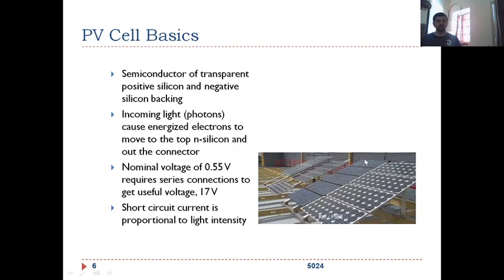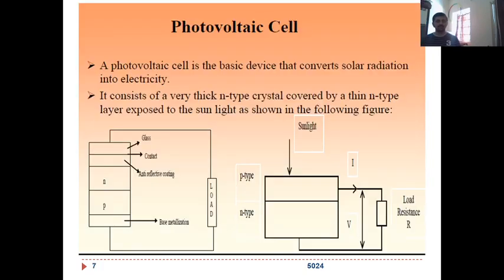The short circuit current, Isc, subscript sc, is usually represented by Isc. It is proportional to the intensity of light which has been incident on the surface of the solar cell. A photovoltaic cell is a basic device that converts solar radiation into electricity. You can see the circuit diagram here: n, p, the base, metallization, the different things on the top glass contact and your reflective coating as we have seen in the cross-sectional view.